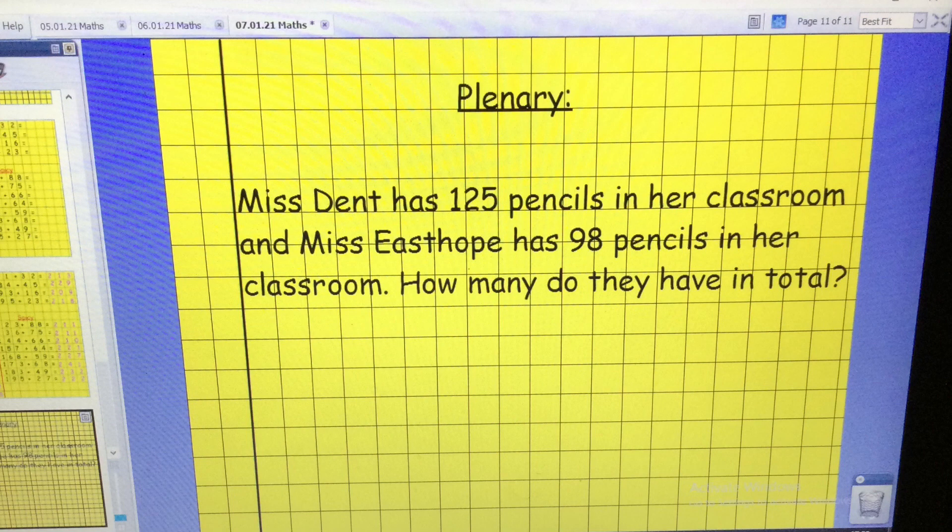And finally, because you're all such professionals at the column method by now, I need your help to work out this word problem. It says, Miss Dent has 125 pencils in her classroom and Miss East Hope has 98 pencils in her classroom. How many do they have in total? Remember with a word problem, you need to find the numbers hiding in there. What you need to do today is do 125 plus 98.